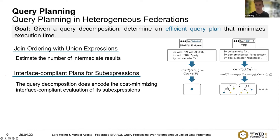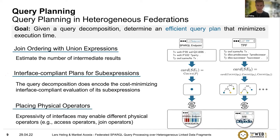For example, it would need to determine the join order for three triple patterns in the query. Finally, it also needs to place the physical operators. In contrast to homogeneous federations, the expressivity of the interfaces may enable or even require different physical operators — including access operators and also join operators.